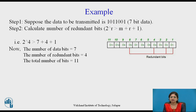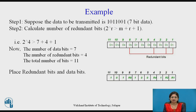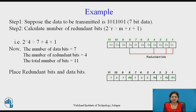Looking at the Hamming frame with positions d1 through d11, redundant bit positions are 1, 2, 4, and 8. Place the redundant bits and data bits into the frame. Data insertion starts from the LSB — least significant bit. So position 1 is r1, position 2 is r2, position 3 is data 1, position 4 is r4, positions 5-7 are data 0, 0, 1, position 8 is r8, and positions 9-11 are data 1, 0, 1.